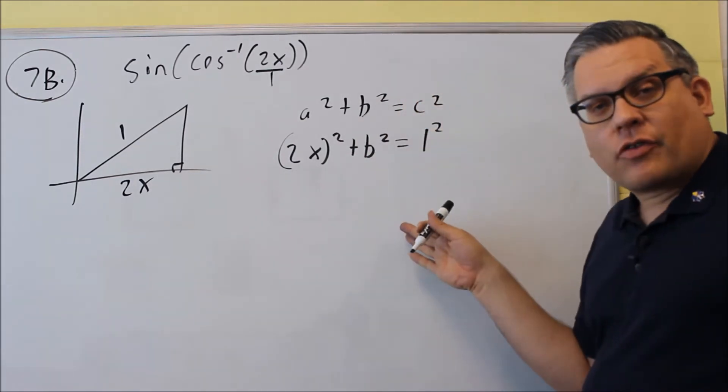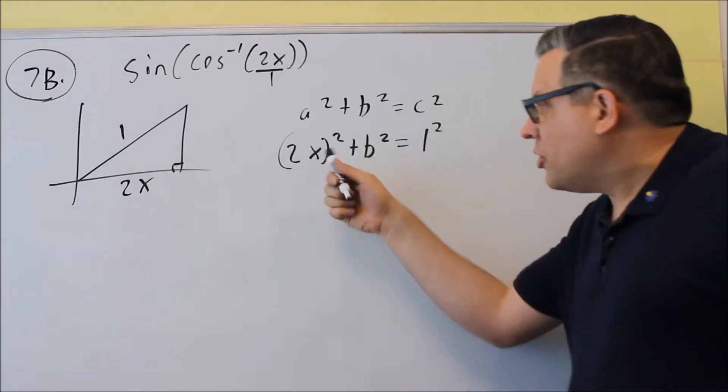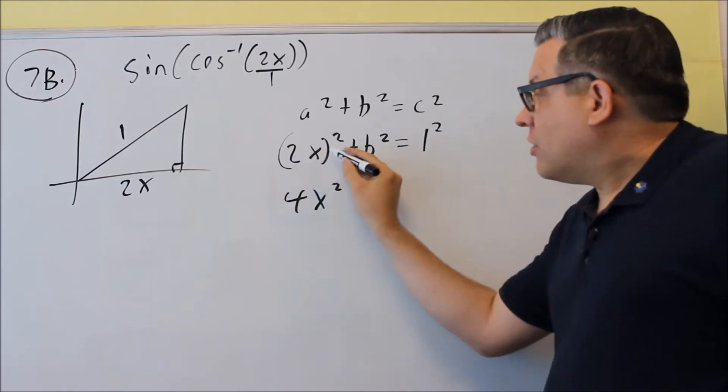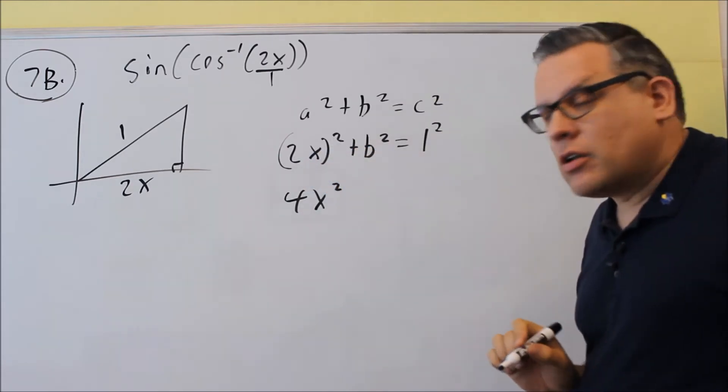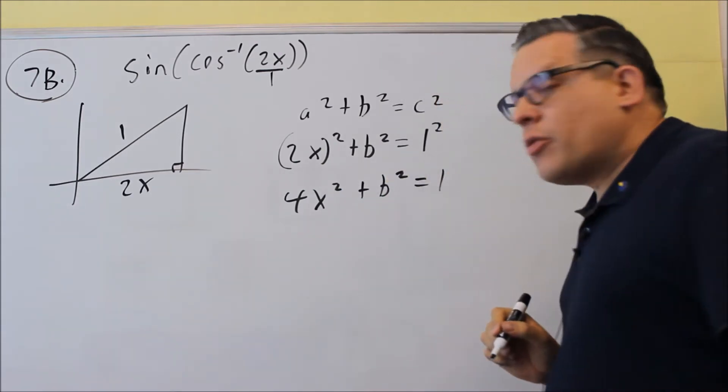Now this problem, you've got to be careful, because when you square the 2x, you have to square both things inside. So when you square that, you're going to get 4x squared. Don't forget that you've got to square that 2 as well, because that's inside the parenthesis. 4x squared plus b squared equals 1 squared, which is just going to be 1.